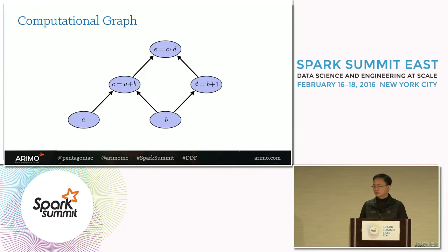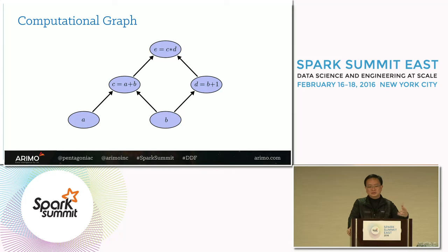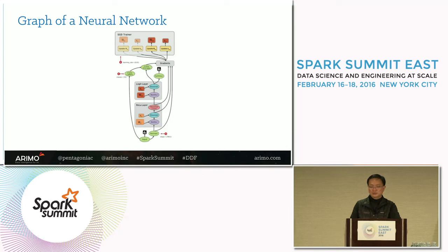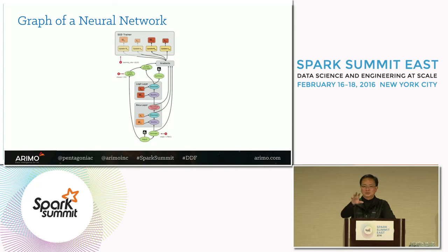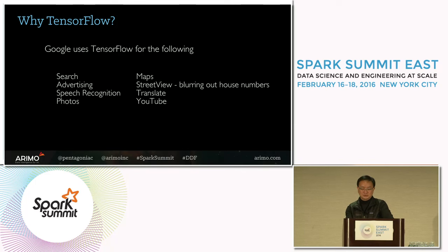A quick review: TensorFlow is essentially a more general architecture to support general compute graphs. You can think of a neural network or a deep learning network as essentially such a flow, with tensors flowing through different components. A lot of Google's implementation of their products essentially now runs on this architecture.